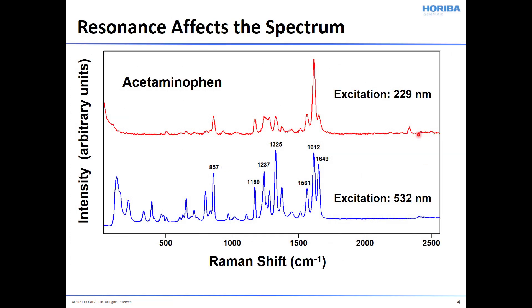Another consequence of resonance enhancement is that by using different excitation wavelengths, the spectra can appear different. Here you see spectra of acetaminophen — the lower spectrum excited at 532 nanometers, which many of you will find quite familiar. At 229 nanometer excitation, those vibrational modes associated with the electronic transition undergo a very significant enhancement. With their greater intensities relative to all other modes not coupled to the electronic transition, the spectrum excited at 229 can appear quite different from that excited at 532, even for exactly the same compound and sample.